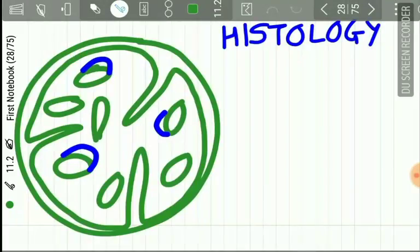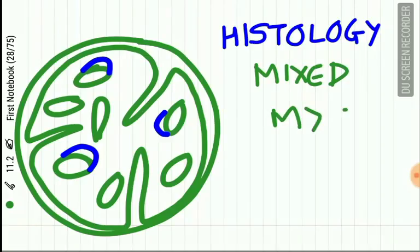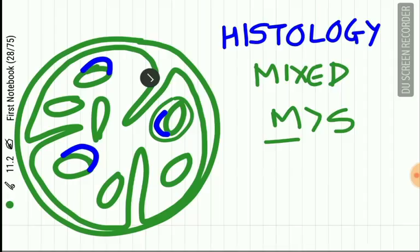Histologically, the sublingual gland is also a mixed gland, but the mucus acini are more than the serous acini. The mucus acini are arranged in tubules and demilunes are also found. The intercalated and striated ducts are poorly developed in the sublingual gland.